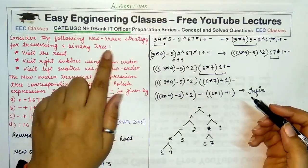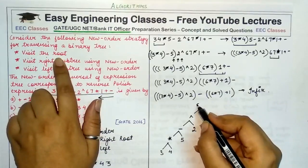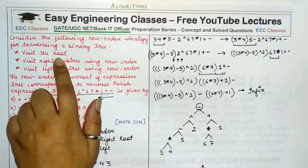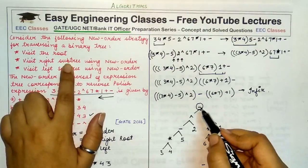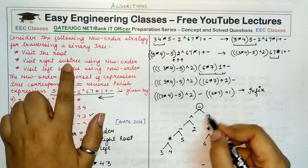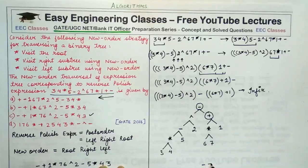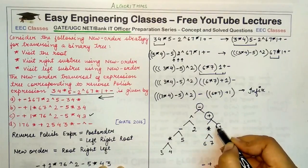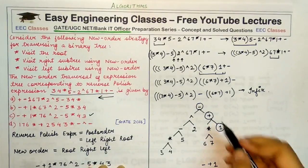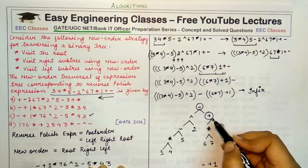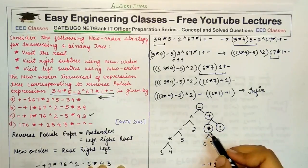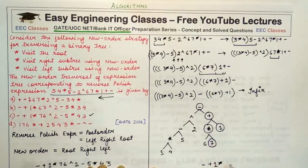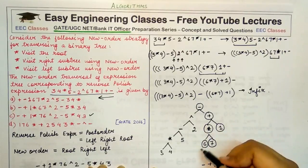Now we traverse using the new order strategy: visit root, then right subtree, then left subtree. Starting at the root (minus), I encircle it and record it. Moving to the right subtree, the root is plus — I visit it, then its right subtree root which is one. Since the right subtree of plus is done, I visit the left subtree root: star, then its right subtree root: seven.